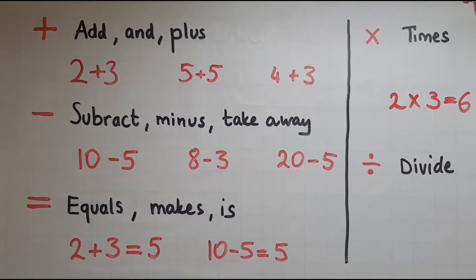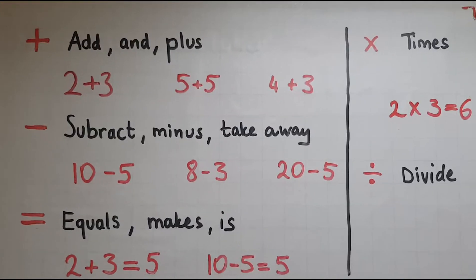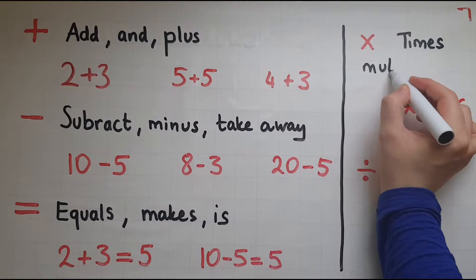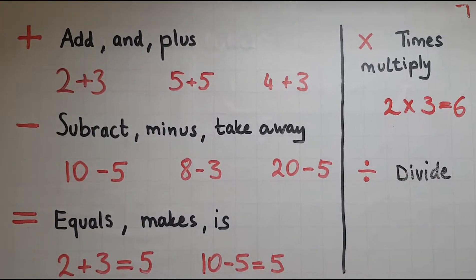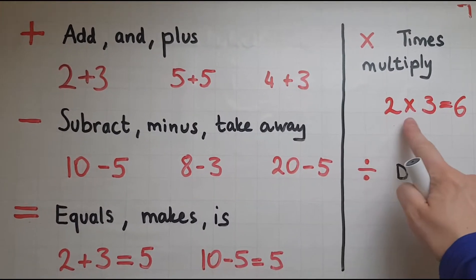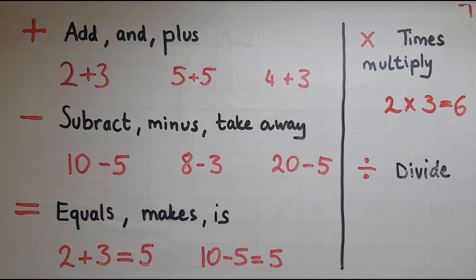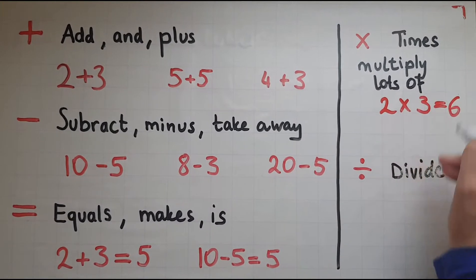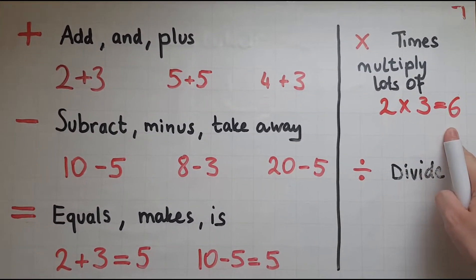Another word for it is the word multiply. 2 multiply 3 equals 6. And also, lots of. 2 lots of 3 give me 6.